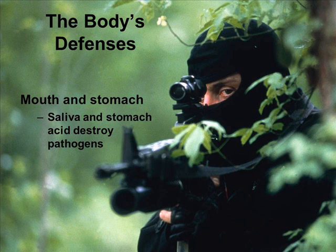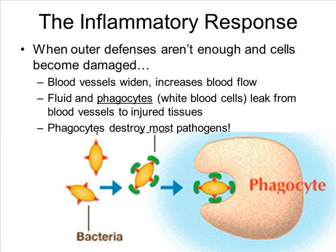But what if something gets in? What if you get a cut or an injury of some kind? That is where the inflammatory response comes in. The inflammatory response is what happens when your outer defenses are breached. Once something is in, your body rushes into action — this is part of your immune system. One of the big things that happens is your blood vessels widen. You get signals to your body, they open up, more blood comes. By more blood, you're also going to be getting more white blood cells, which are called phagocytes.